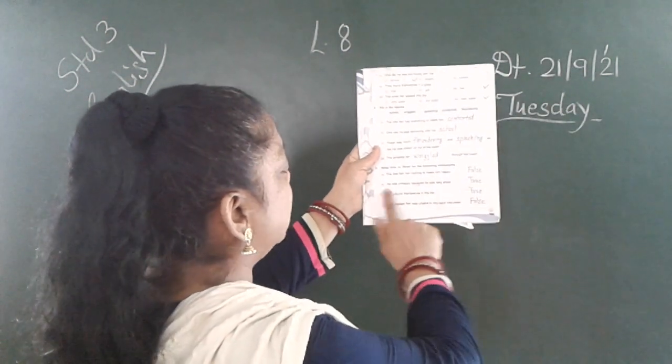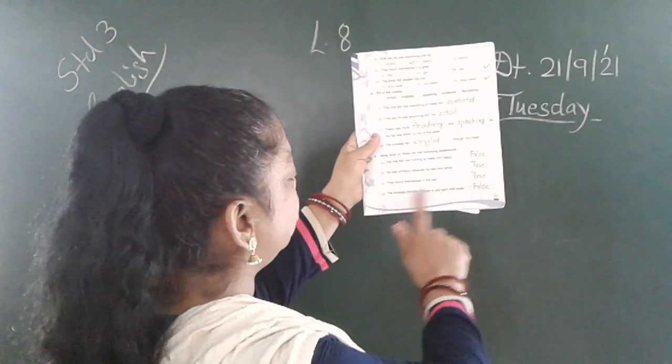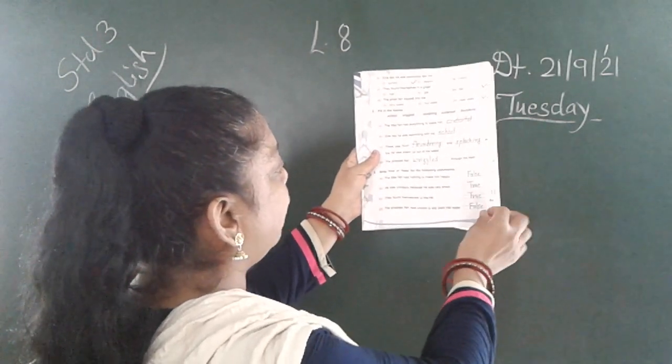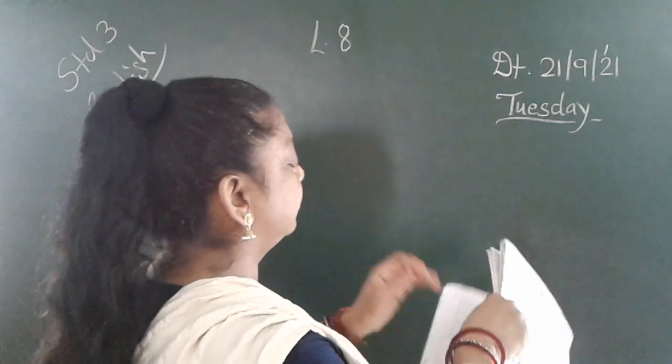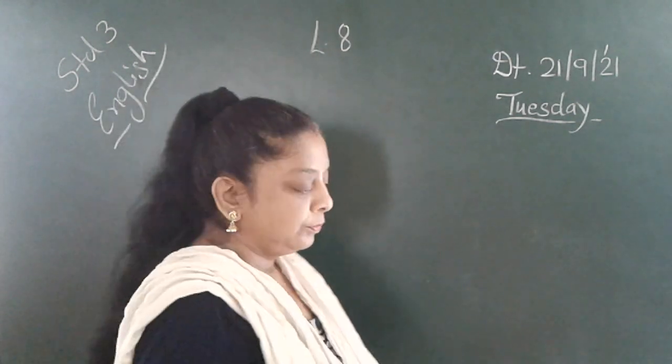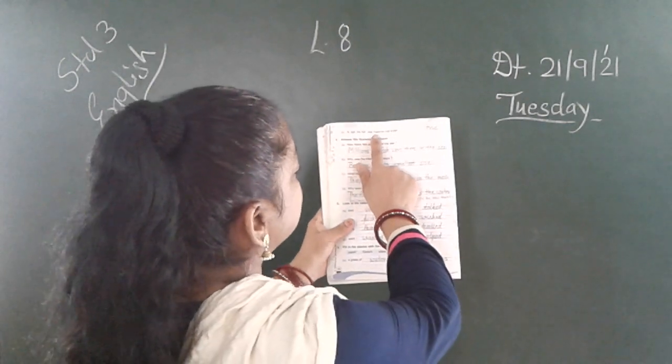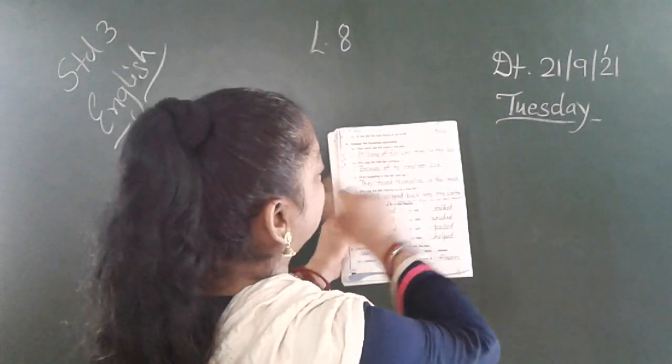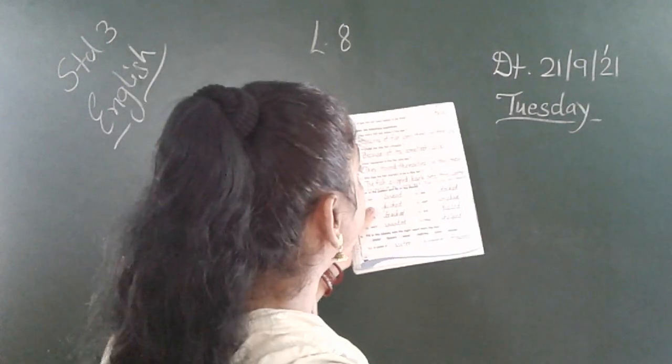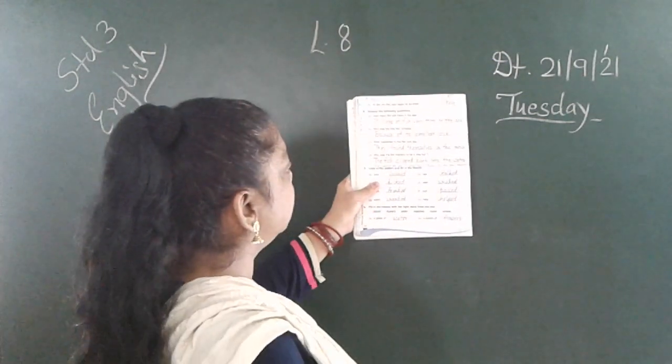You can see. A. False. B. True. C. True. D. False. E. At last the fish was happy to be small. That is also true. You can see. Answer: True.